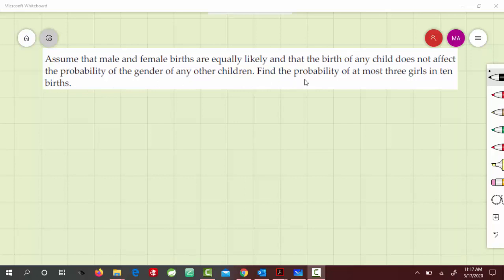In this case, we have to find the probability of at most three girls in 10 children, in 10 total births.